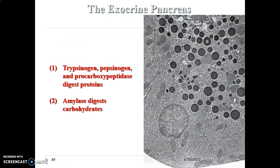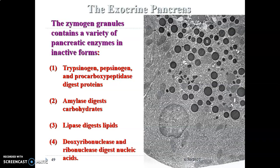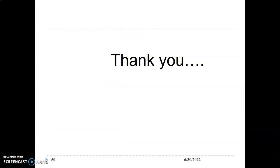The enzymes secreted by the pancreas include trypsinogen, pepsinogen, and procarboxypeptidase — these digest proteins. Amylase digests carbohydrates, and lipases digest lipids. The pancreas also produces deoxyribonuclease and ribonuclease, which aid in the digestion of nucleic acids. These enzymes are usually produced in an inactive form and are later activated. Thank you very much.